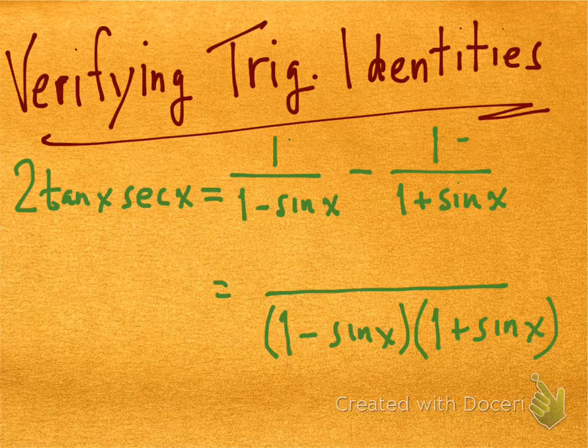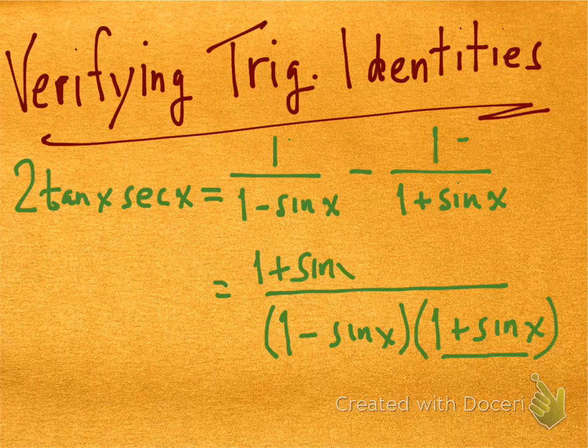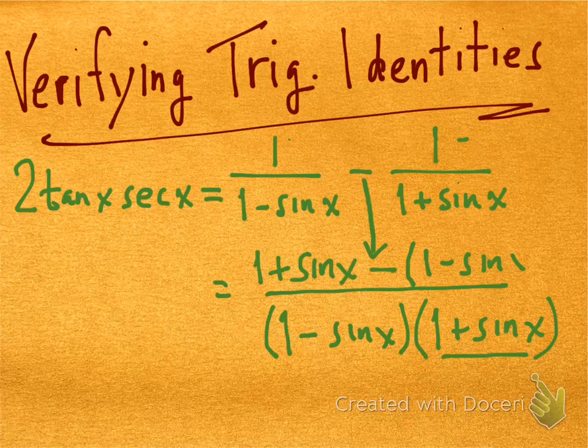And fortunately, that's not too bad because each original numerator is just a one. So all I have to do is multiply the one times (1+sin(x)), and that gives me (1+sin(x)). And then also over here on this other fraction, I'm going to say one times (1-sin(x)). But I have this subtraction sign in here, so I have to bring that down. So minus, and then a very important little detail here, especially when I'm subtracting, I want to use parentheses. So it's (1-sin(x)) here inside the parentheses.